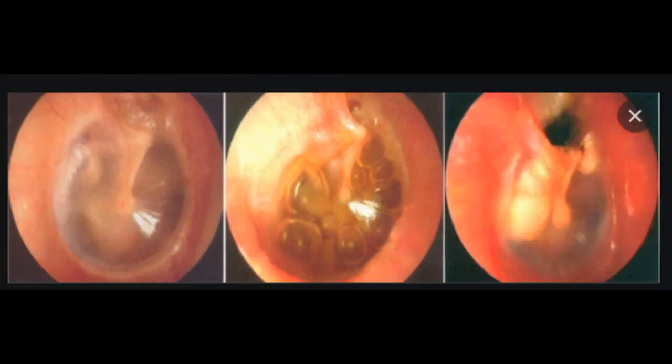Otitis media with effusion (OME), also known as serous otitis media (SOM) or secretory otitis media (SOM), and colloquially referred to as glue ear, is fluid accumulation that can occur in the middle ear and mastoid air cells due to negative pressure produced by dysfunction of the eustachian tube. This can be associated with a viral upper respiratory infection (URI) or bacterial infections such as otitis media.